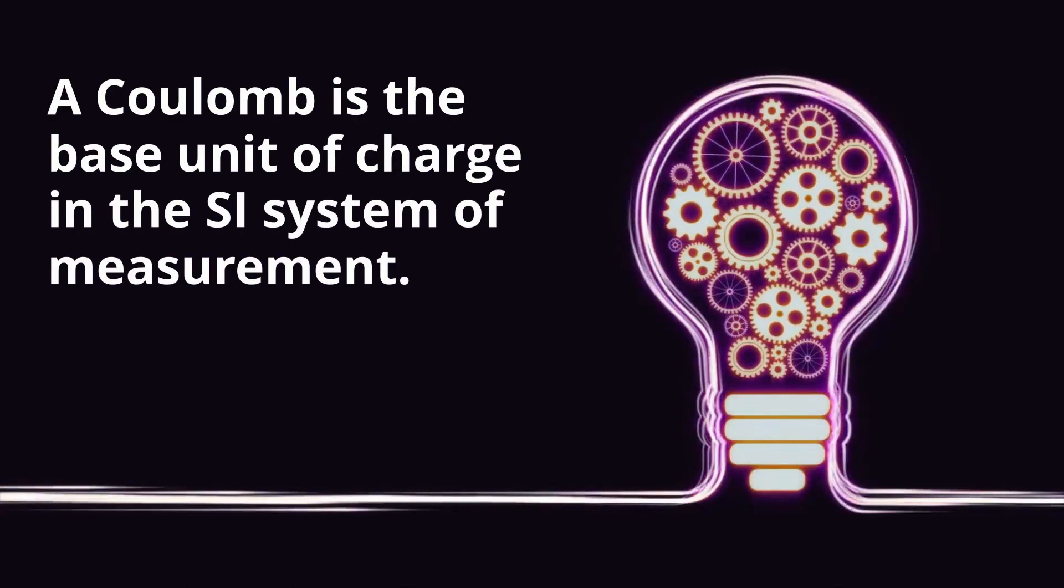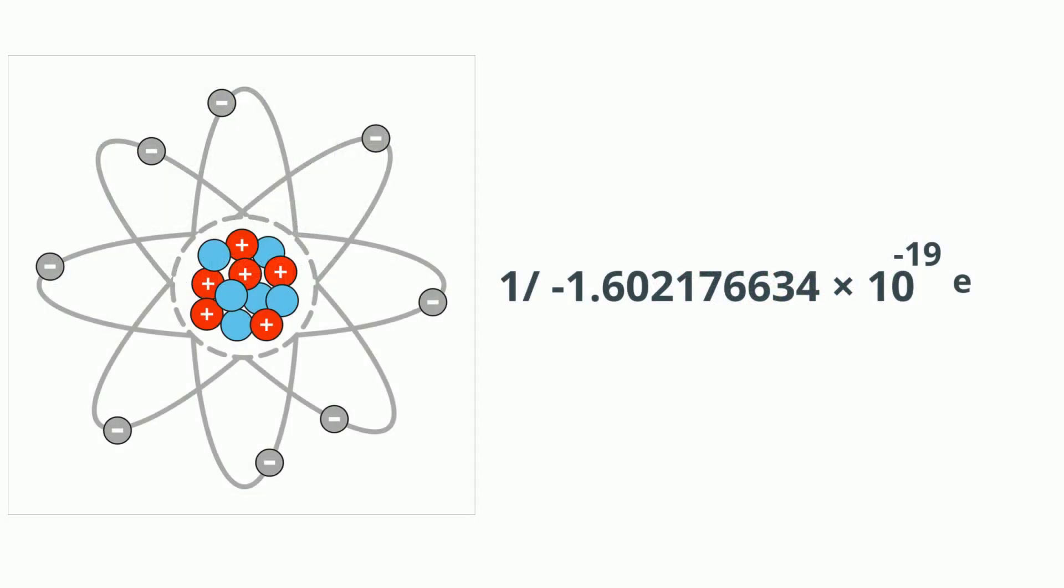A Coulomb is the base unit of charge in the SI system of measurement. A Coulomb is equal to 1 over 1.602176634 times 10 to the minus 19.